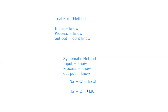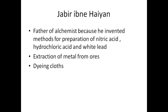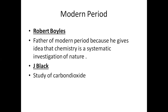So they are using these methods — they know what they are giving as input and what the output will be. If you know what the output will be, you are using the systematic method. If you don't know the output, you are using the trial-and-error method. The difference between the Muslim period and the modern period is that in the Muslim period they used the trial-and-error method, while in the modern period they use the systematic method.